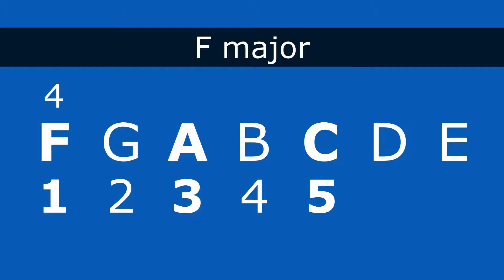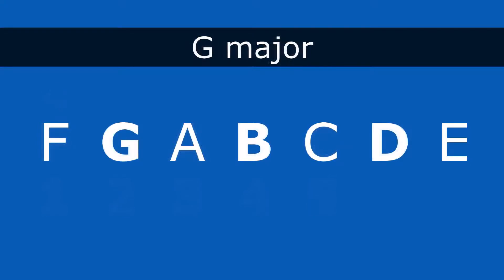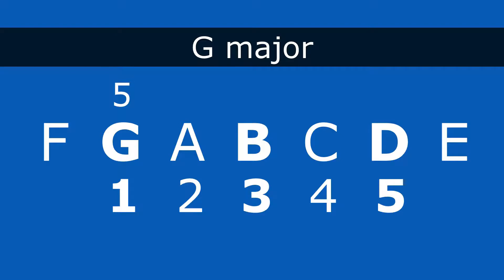Let's move to the next note of the scale. G is the 5th scale degree, and now we're going to build a chord from it. So G becomes the root, and I need a 1, 3, 5, but only using the notes of the C major scale. So G is 1, B is 3, D is 5. So when I play that chord — G, B, D — I have G major. So G major is the 5th chord in the key of C.